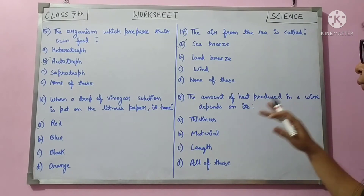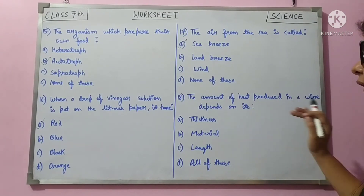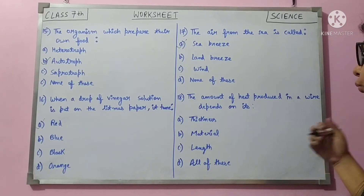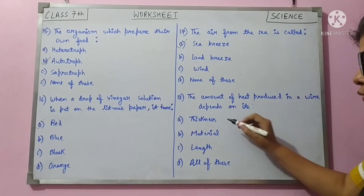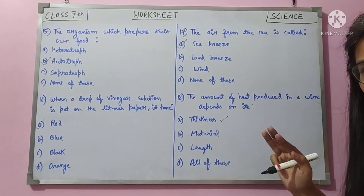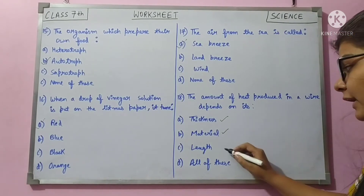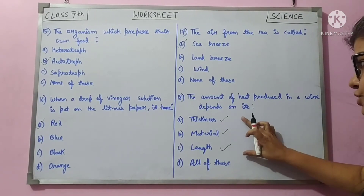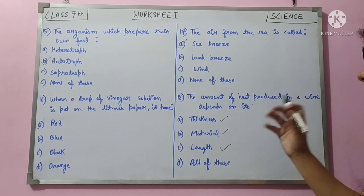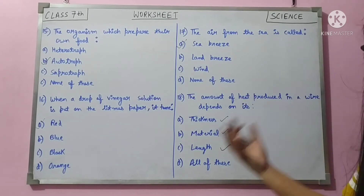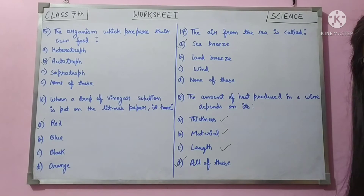Question 18: the amount of heat produced in a wire depends on — we studied this in the chapter. It depends on the thickness of the wire, the material, and the length. All three determine how much any object heats up. Answer is D — all of these.